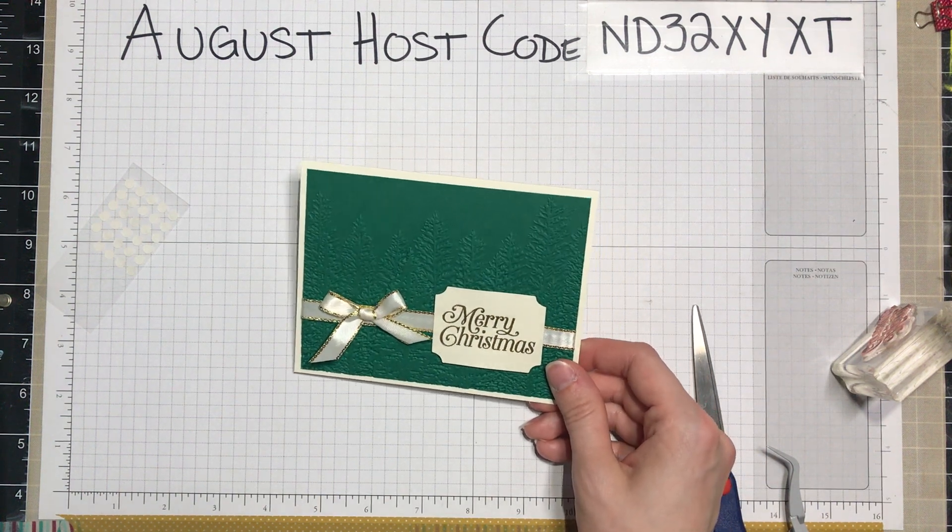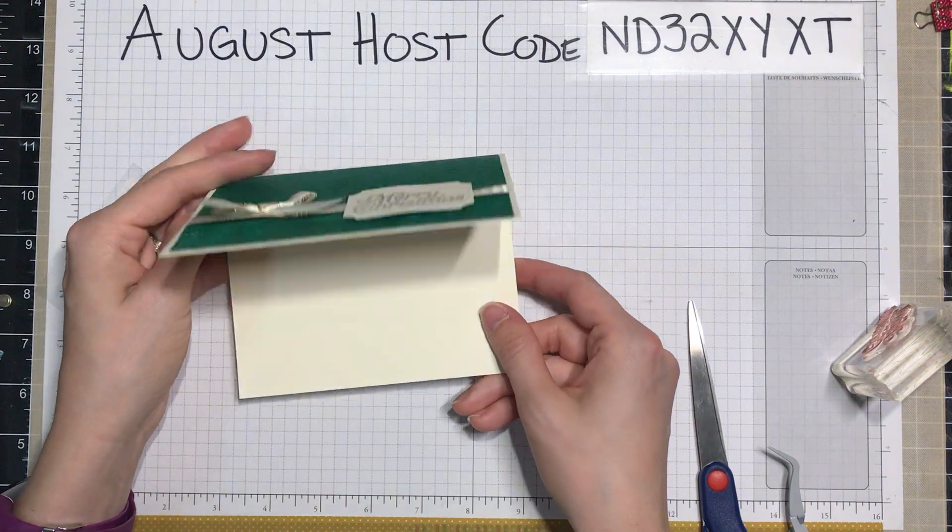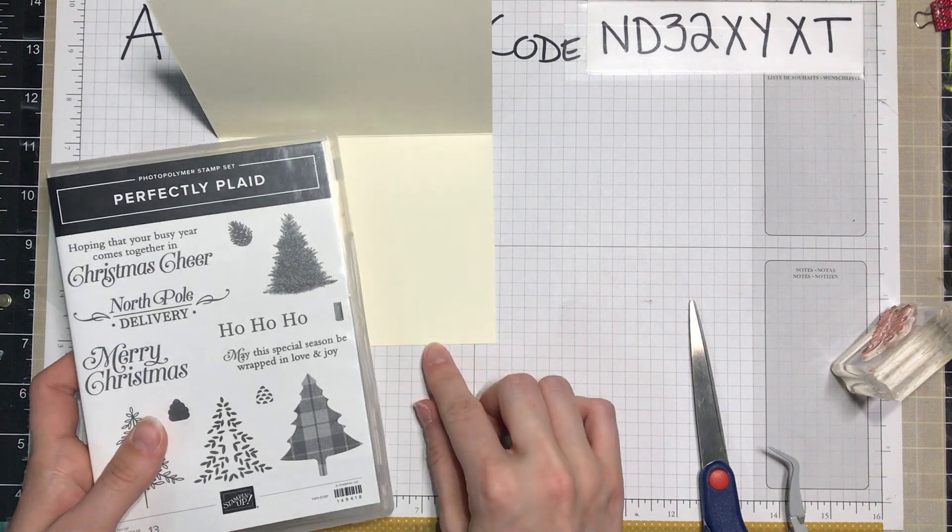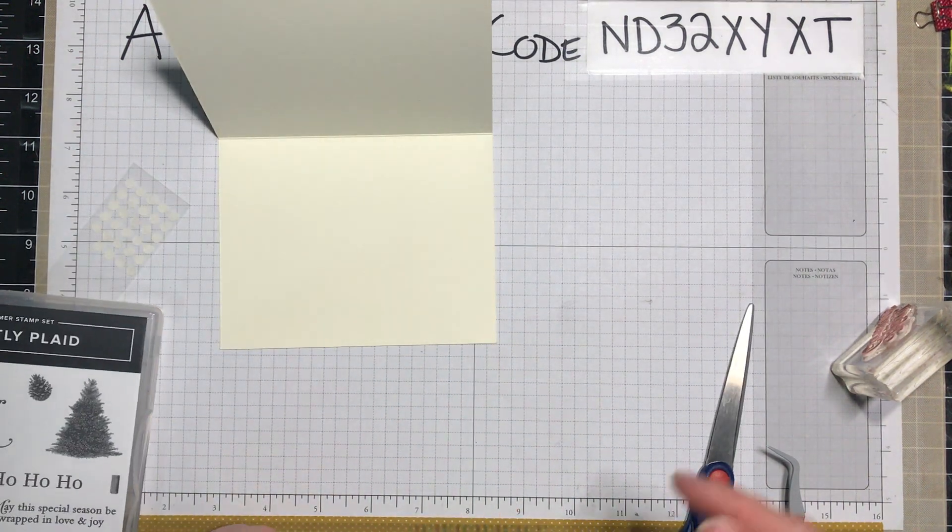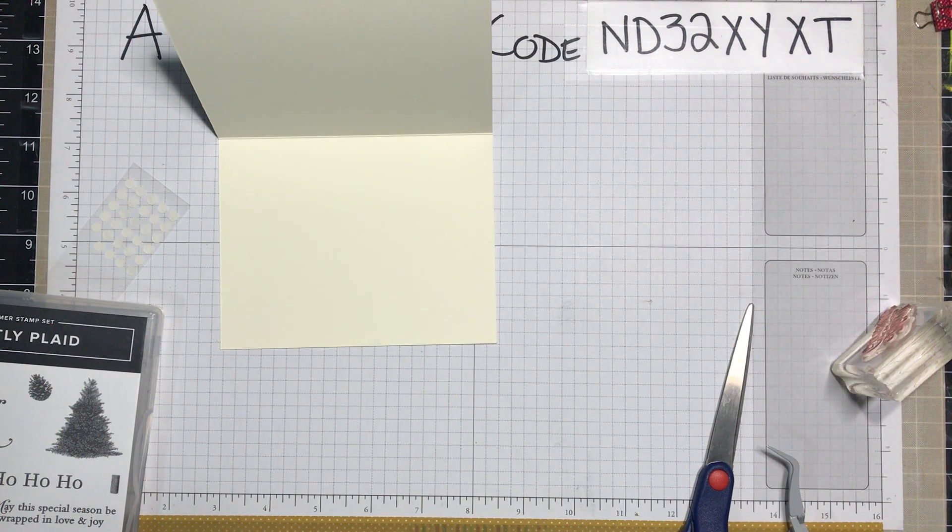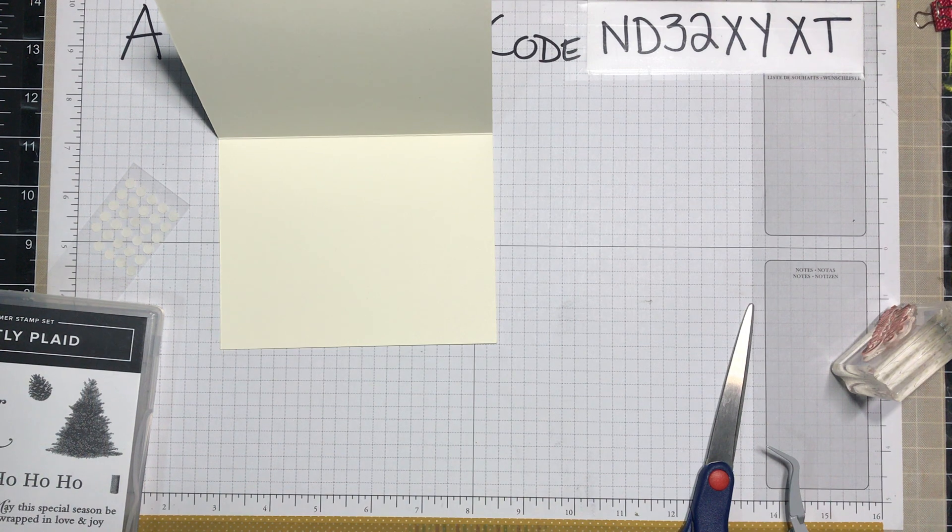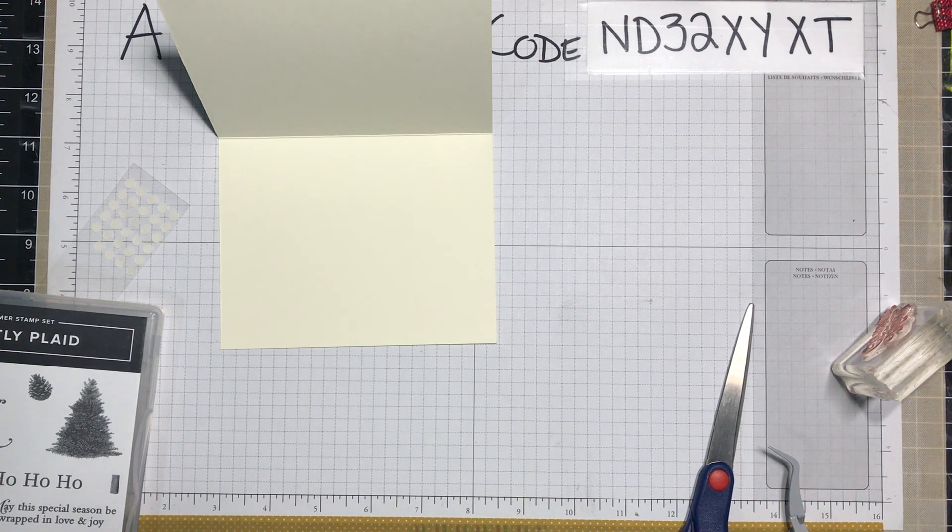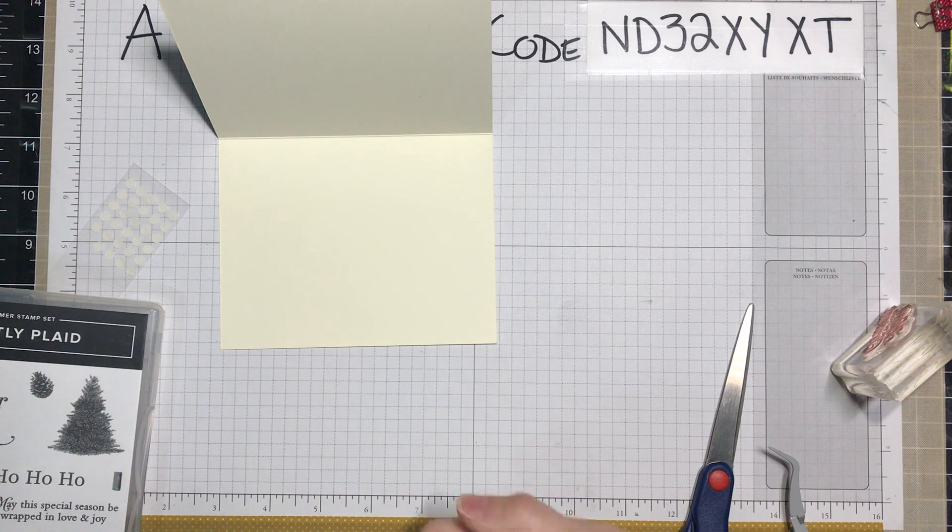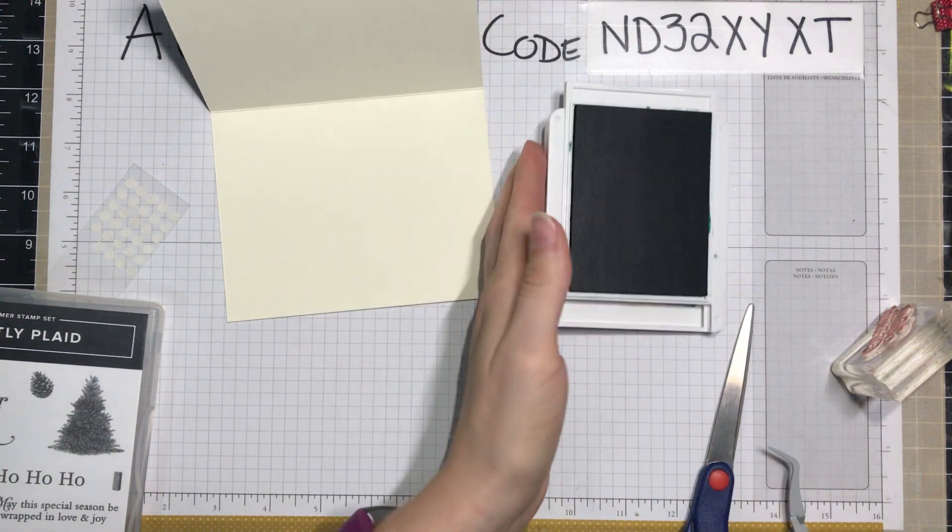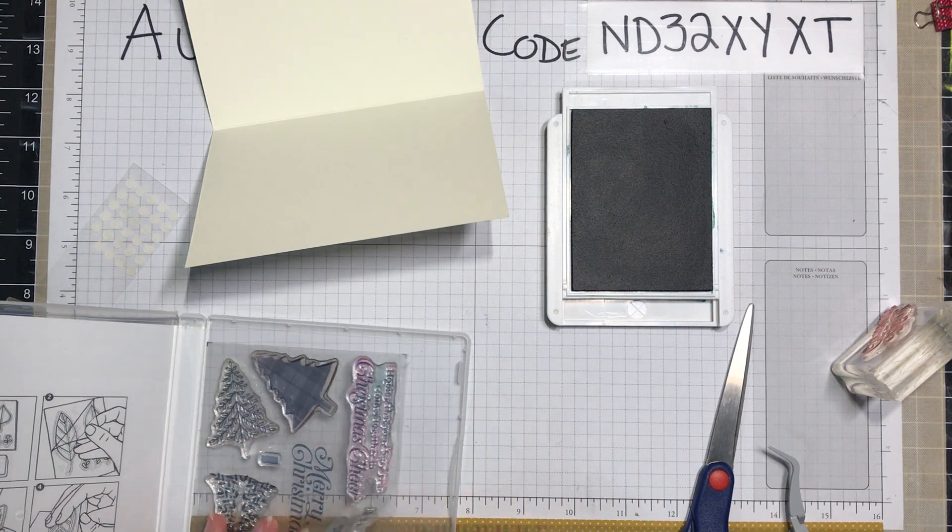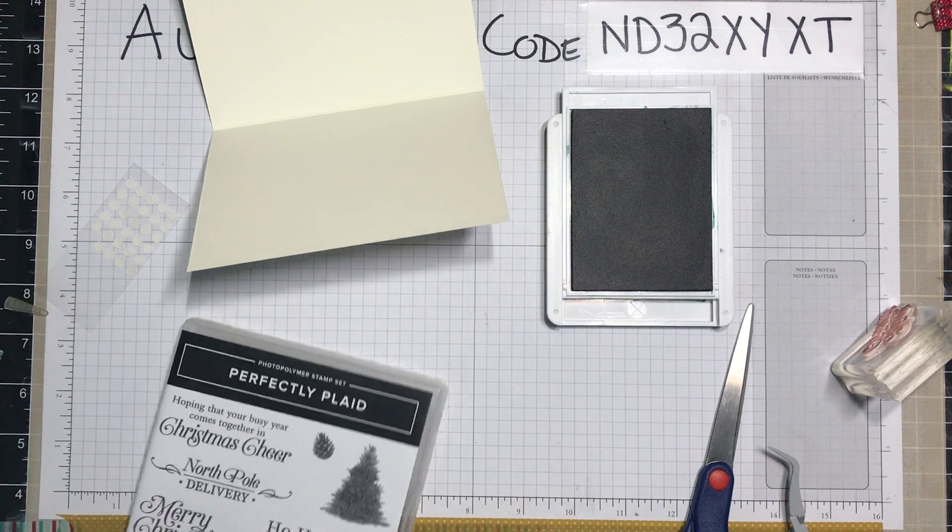And with that, I've got another little card ready to go and I could add an inside sentiment. I could even add, if I wanted to, this tree. I could stamp like a series of them right in here. That would be a lot of fun to do. Let's actually do that. Let's grab my shaded spruce. Let's try that. That'll be a fun way to tie the inside with the outside. And then we'll actually have it like come off the paper too. I think that'll be nice.